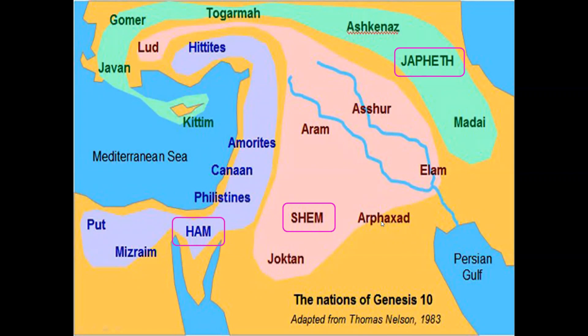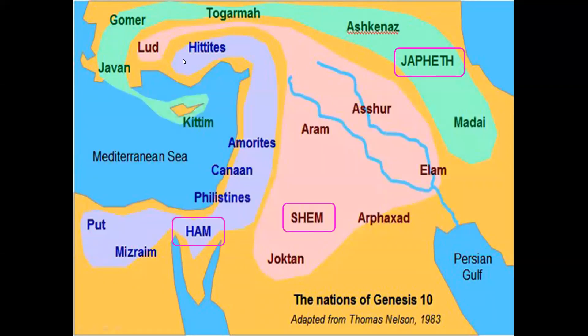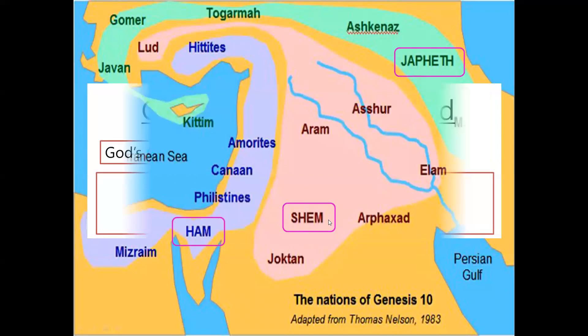Through these pictures, we can see God's creation commandment. Because after the flood, God commanded Noah: 'Be fruitful and multiply and fill the earth.' And as you see, their sons scattered like this — they obeyed God's commandment.